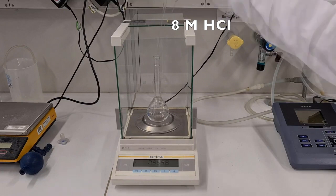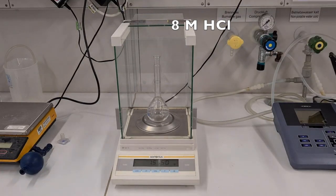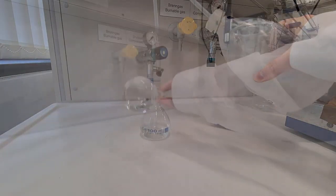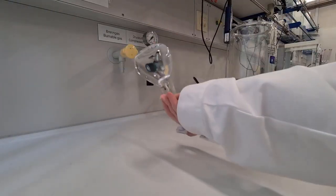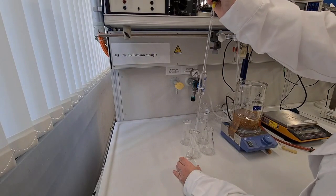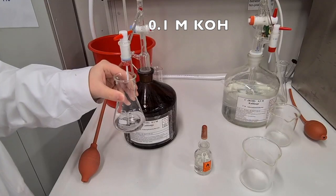To determine the exact concentration of the hydrochloric acid, 1.5 grams of 8 molar hydrochloric acid are diluted to 100 milliliters. 20 milliliters of this solution are titrated with a 0.1 molar KOH standard solution.